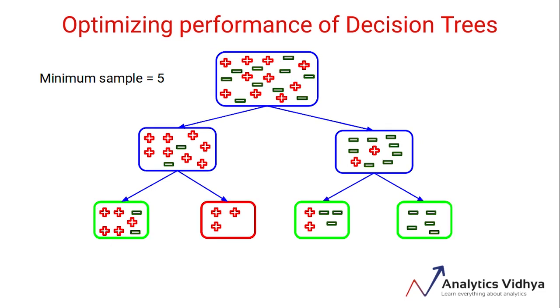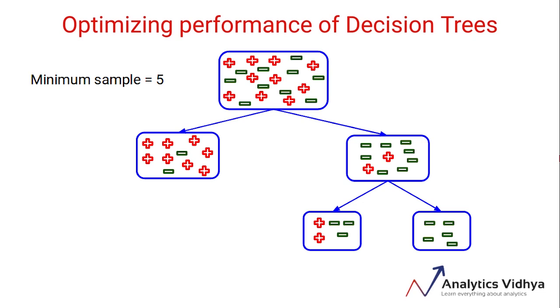Now here, the nodes marked with green color satisfy the condition as they have a minimum of 5 samples, and hence they will be treated as leaf or terminal nodes. But the red node that you can see here, it only has three samples. It cannot be considered as a leaf node, so its parent node will become the leaf node. And hence this will be the final tree after setting the minimum samples for terminal nodes as 5.